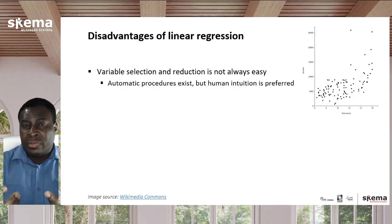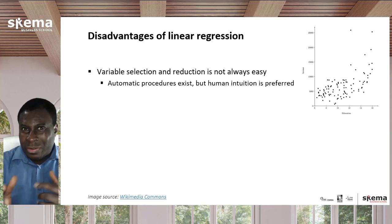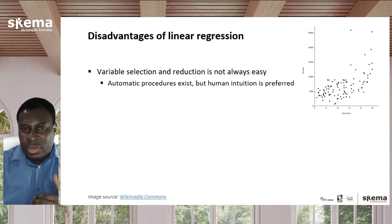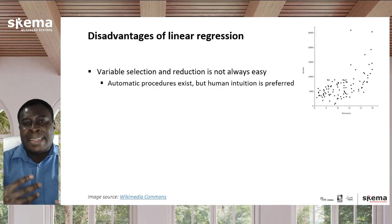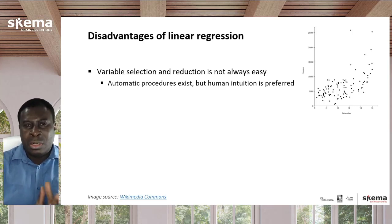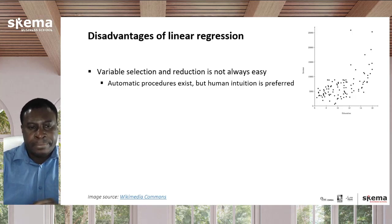Using fewer, more relevant variables will give you a better, more meaningful result. However, which are the five or six more relevant ones? How do you know them in advance before you do the analysis? That's not very clear. Linear regression has some tools to help you, but really human intuition is needed there.